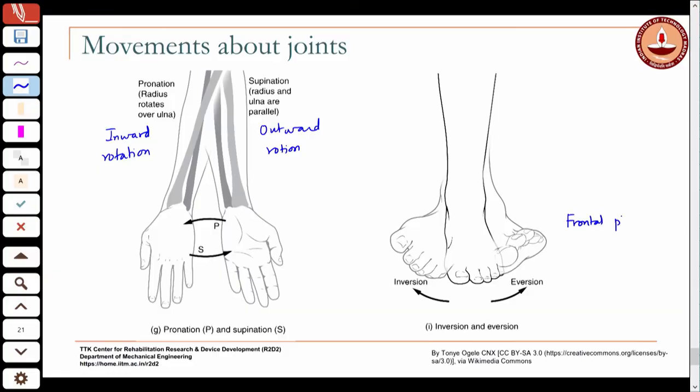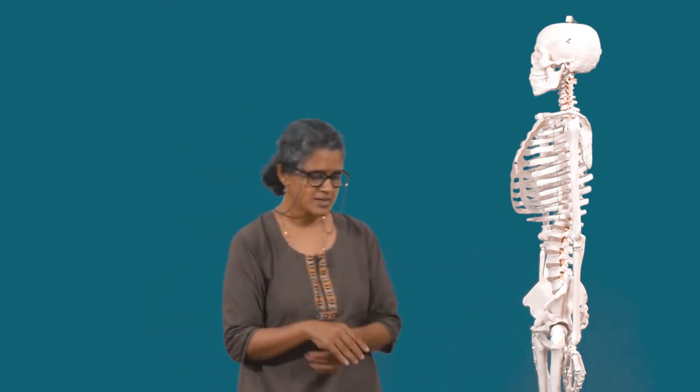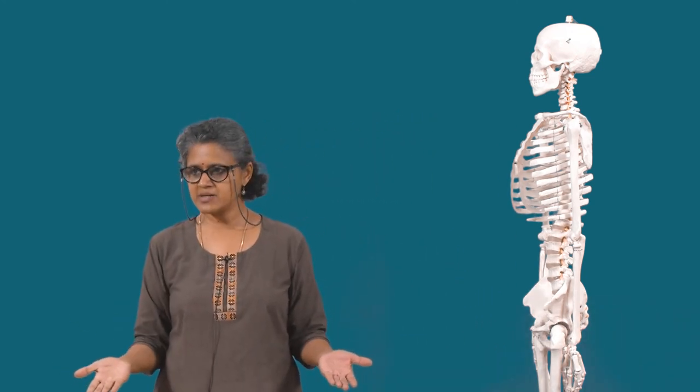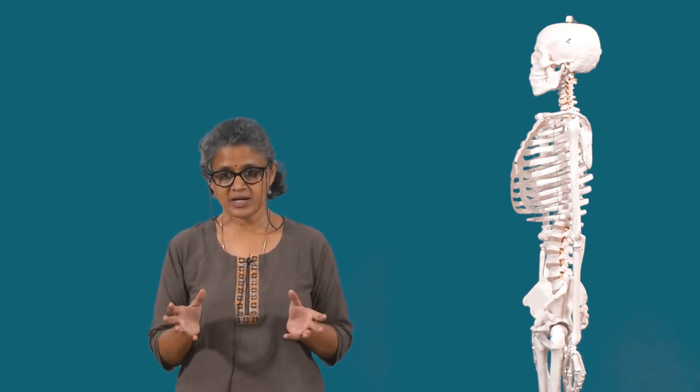Inversion and eversion happen in the frontal plane. Many of these motions, even though they are predominantly in one plane, may have some slight movement in other planes as well, but you look at where the predominant motion is happening. In the anatomical position, the forearm is in the supinated position. That concludes the terminology we will use when talking about movement of the body segments.